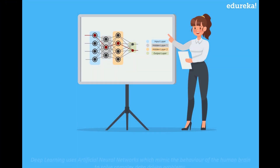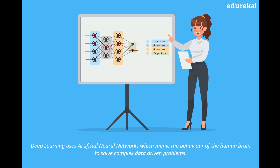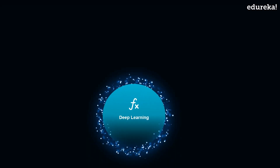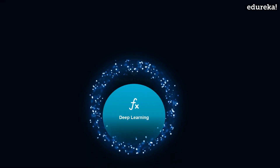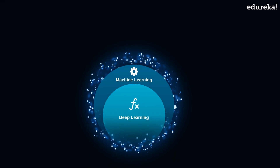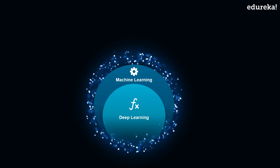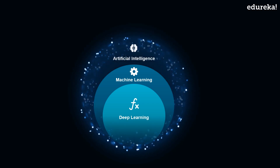An artificial neural network is the functional unit of deep learning. Deep learning uses artificial neural networks which mimic the behavior of the human brain to solve complex data-driven problems. Deep learning in itself is a part of machine learning, which falls under the larger umbrella of artificial intelligence.